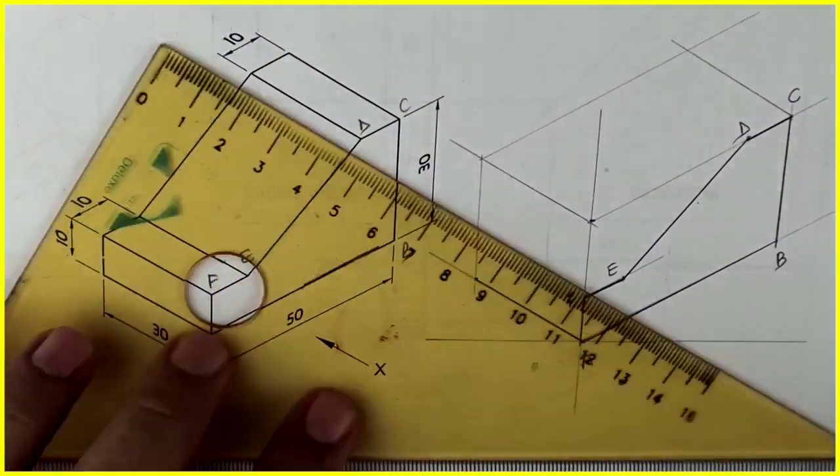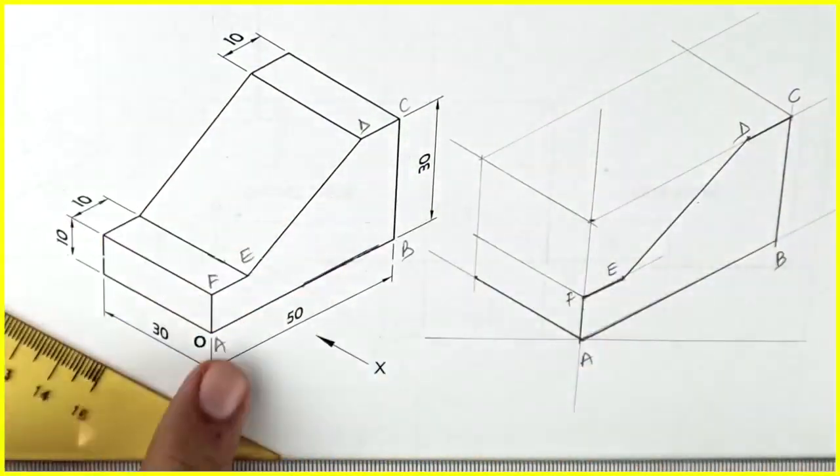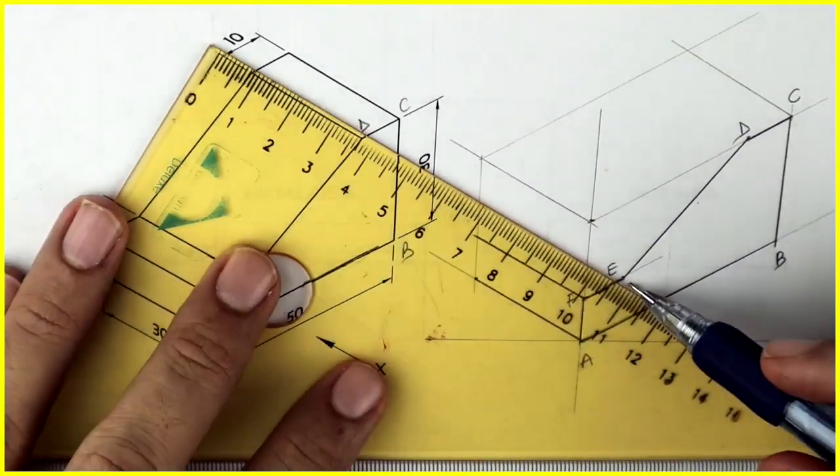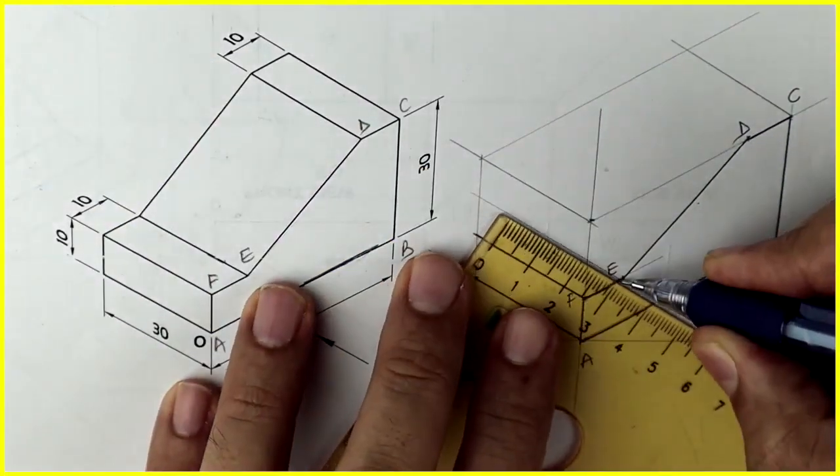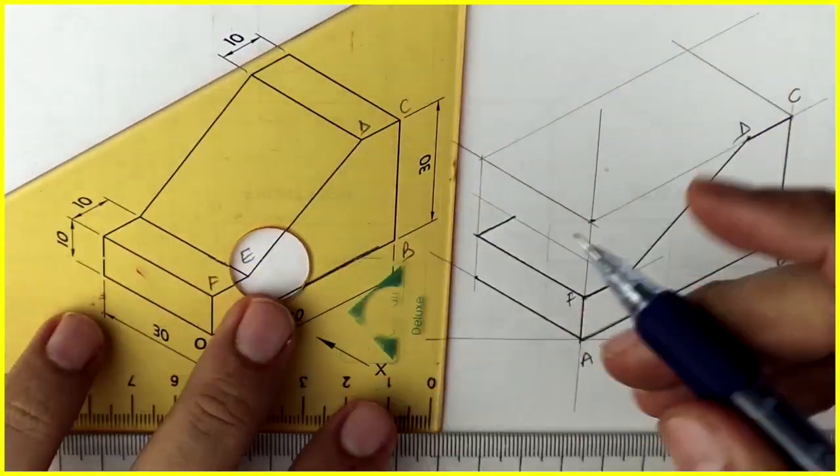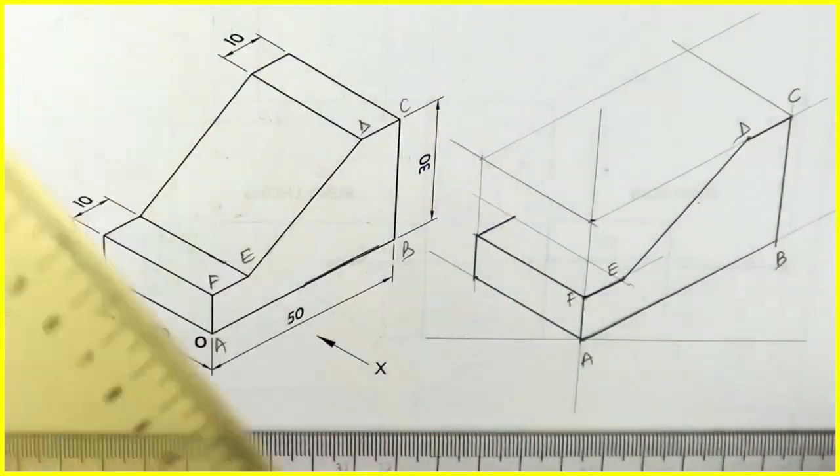Once we are done with the front portion, now we'll go behind. We'll take width. How much is the width? We'll take 30, 30. This line will also be 30. So we got this behind portion.